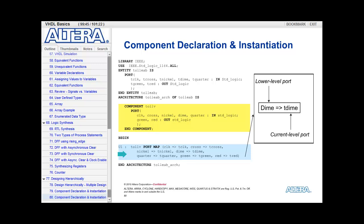We're mapping the clock signal in the lower-level Toll V to the signal T clock, which is an input in Toll EAB. We're mapping the lower-level signal cross, which is an input on Toll V, to the upper-level signal T cross, which is an input in Toll EAB. Follow that same path, nickel is mapped to T nickel, dime is mapped to T dime, quarter to T quarter, green to T green, and red to T red. Thus, we've mapped all of the lower-level ports to signals on the upper-level design.